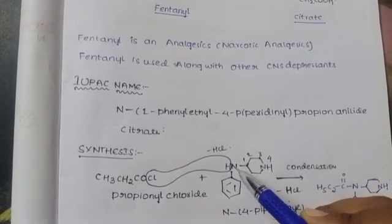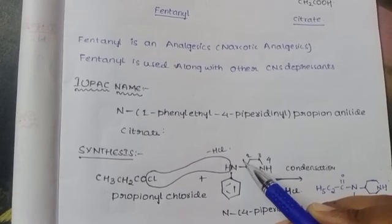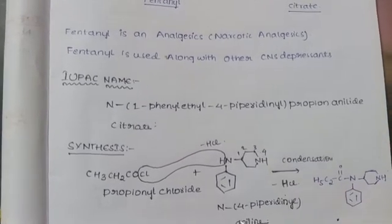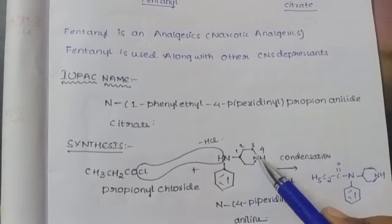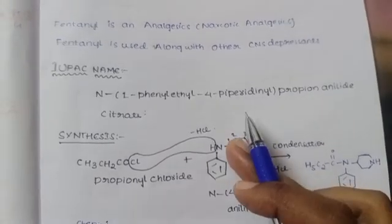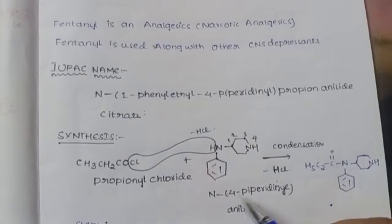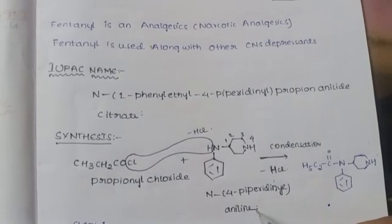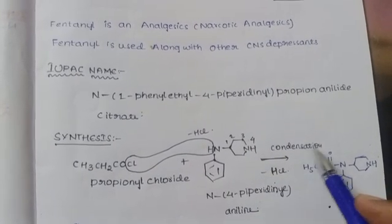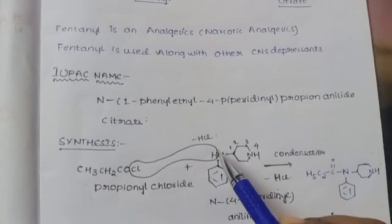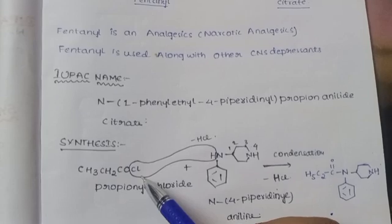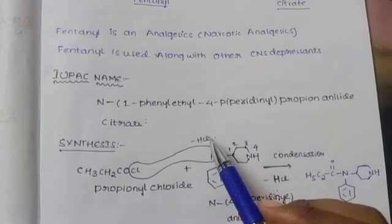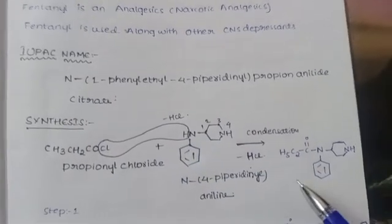Here the numbering is 1-2-3-4, that's why it is named N-4-piperidine and this is aniline. Due to condensation, the hydrogen is removed along with chlorine as HCl.